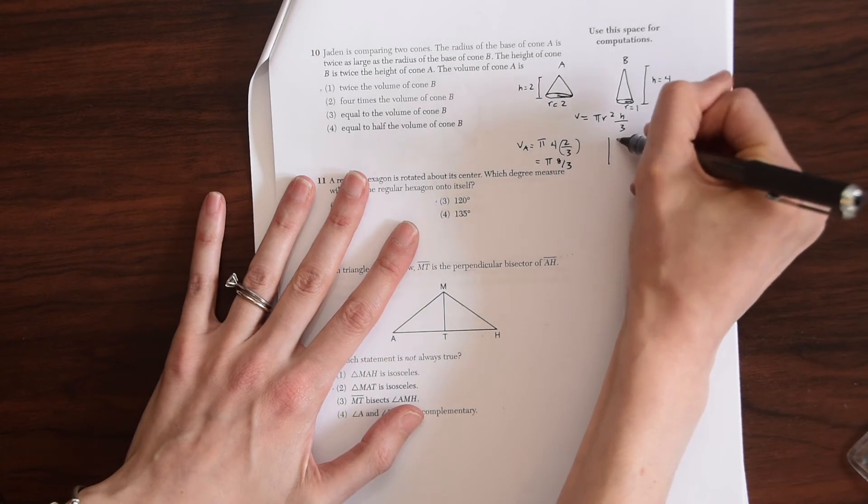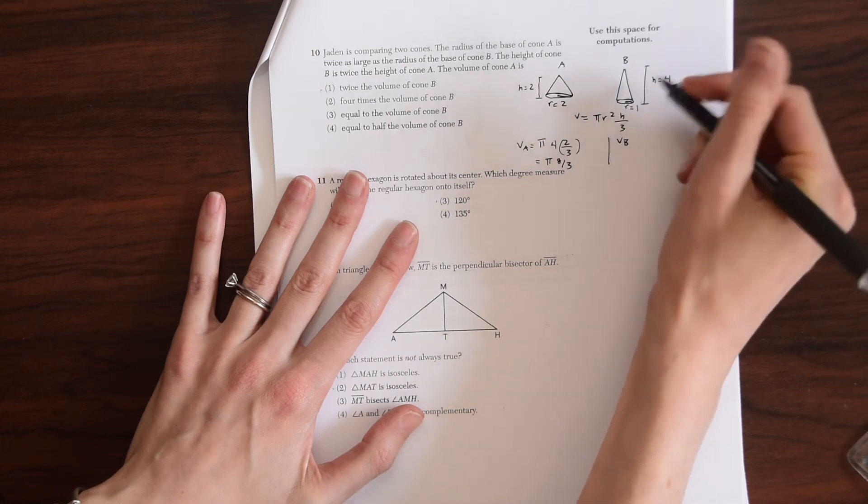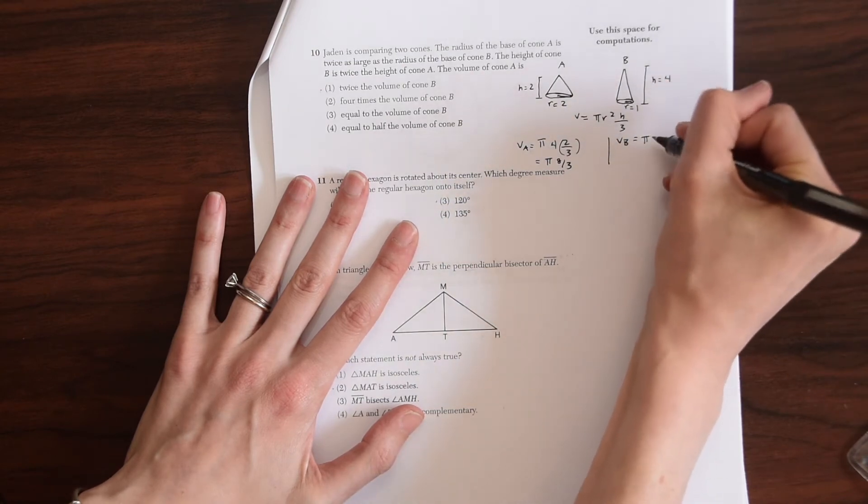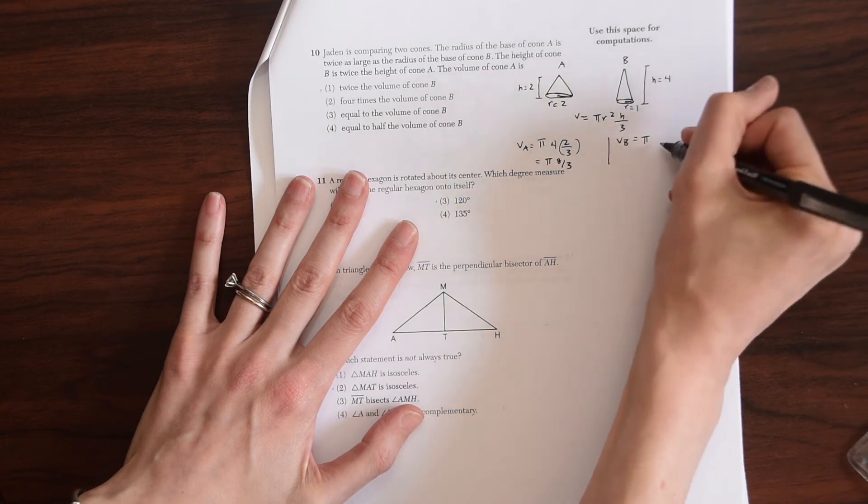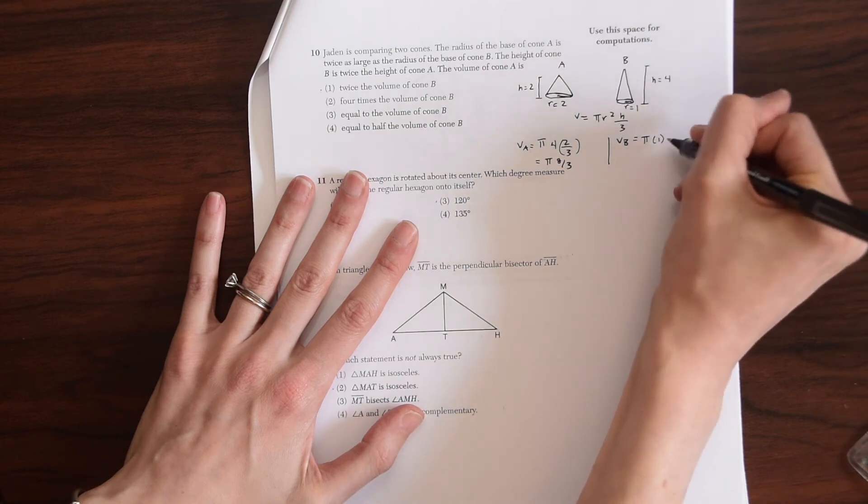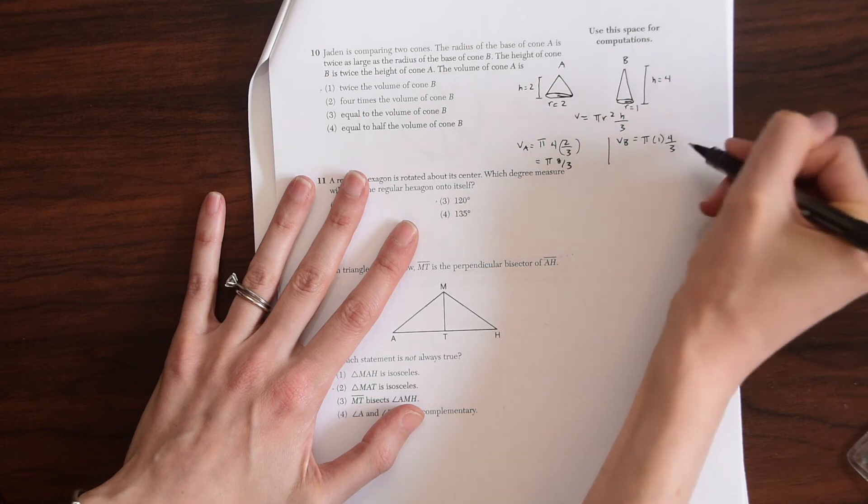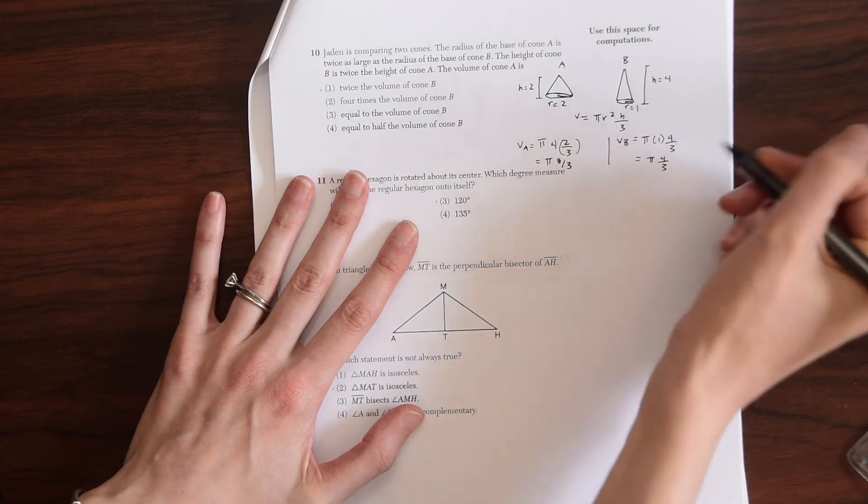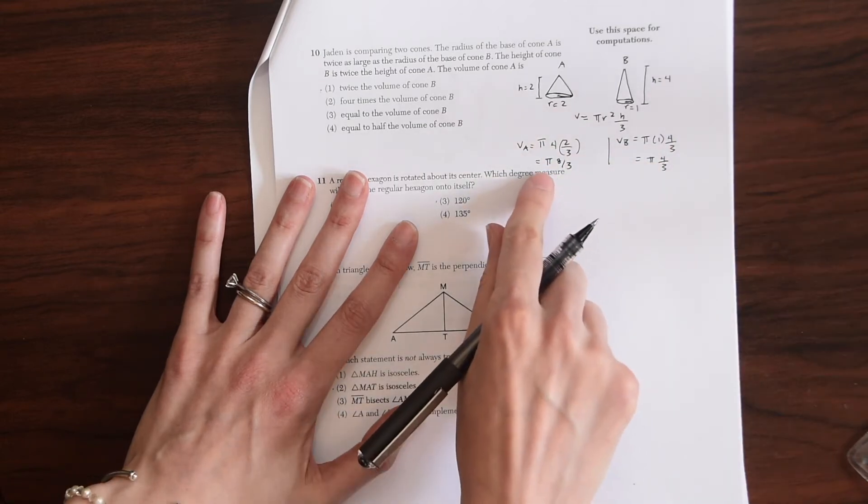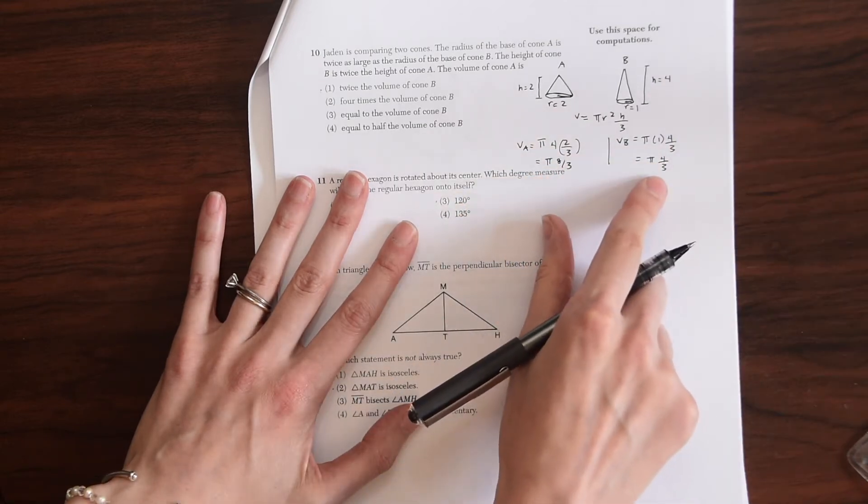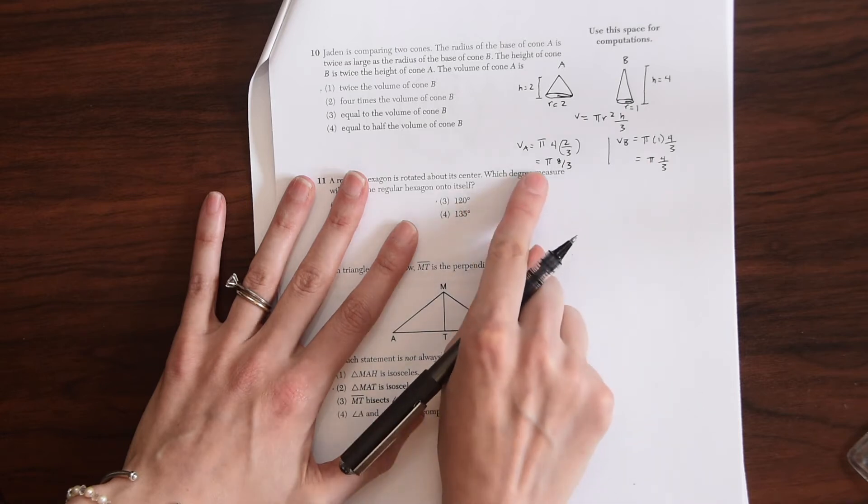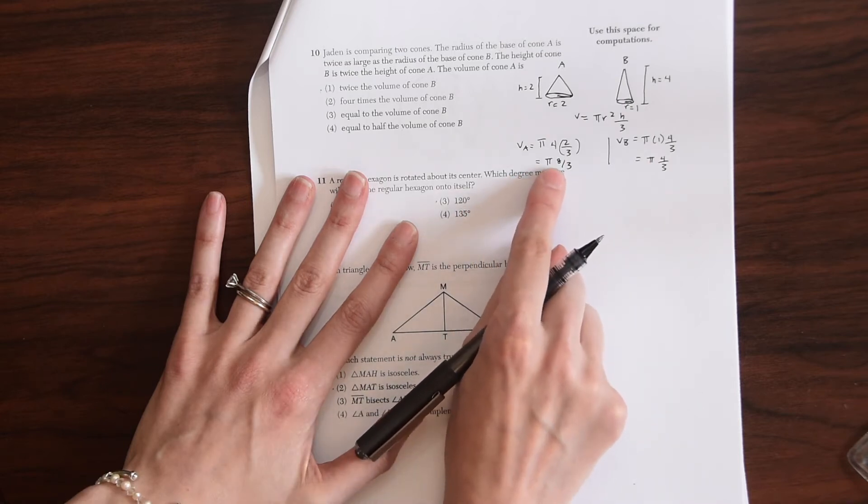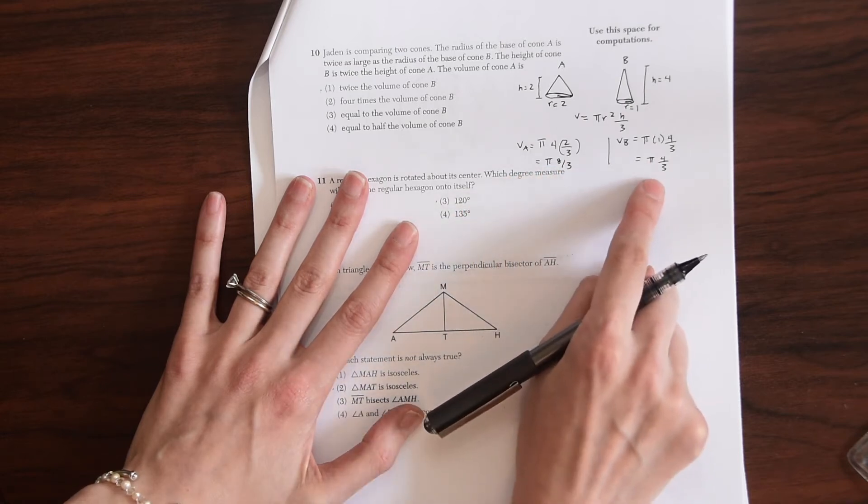And now when we look at the volume of B, the second cone, we get pi r squared, which is just one. So times one times h over three times four over three. So this gives us pi times four thirds. So notice that cone A is twice as big as cone B in terms of volume, because here we have eight thirds pi and then B is four thirds pi.